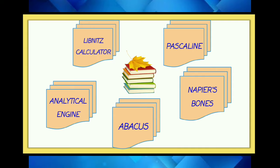The next device is the Leibniz calculator, developed by Gottfried Leibniz. And the main device is the analytical engine, also known as the difference engine, developed by Charles Babbage, who is known as the father of computers. It was invented in 1822.